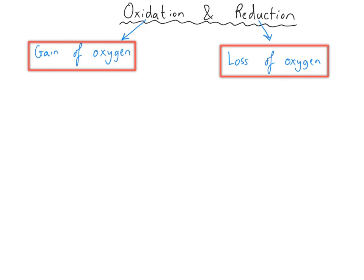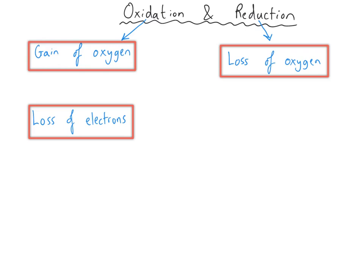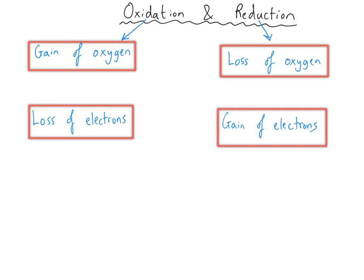Oxidation has a second meaning, and that is a loss of electrons. And reduction also has a second meaning, which is the gain of electrons. I know it's confusing because there are two definitions for the same word, but it is nice in one respect in that oxidation and reduction are opposites for whichever situation you're talking about. Whether you're talking about oxygen or electrons, oxidation and reduction mean the exact opposite thing.